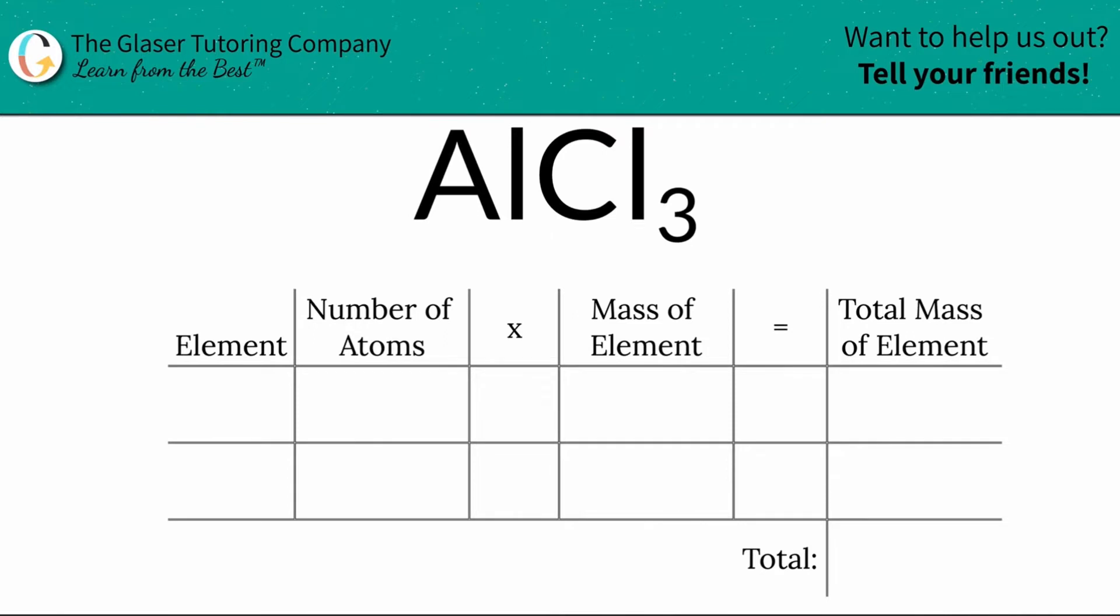Simply we're going to plug in the elements that we see in the compound. So I see aluminum and I see chlorine. Next thing is I'm going to look at the number of atoms I have in each element. That's where the subscripts come into play. At the bottom of aluminum there is an invisible one, so that means there's one aluminum. And at the bottom of chlorine the subscript is three. So I know I have three chlorines.